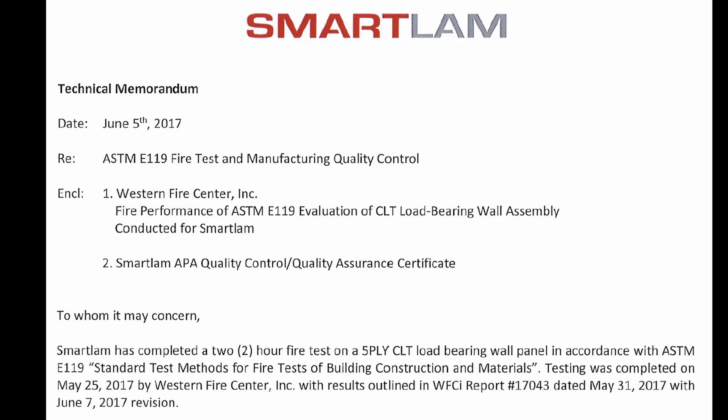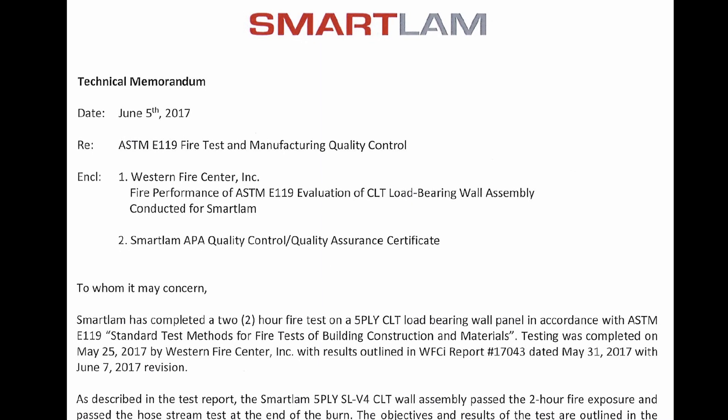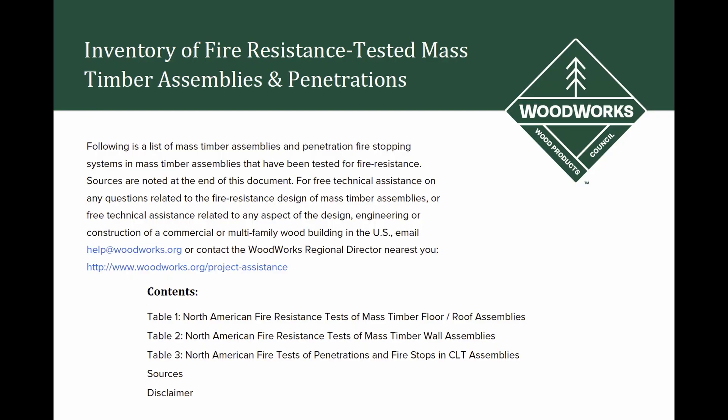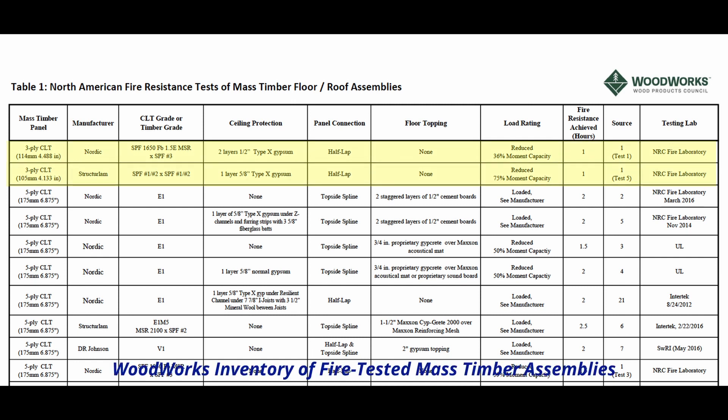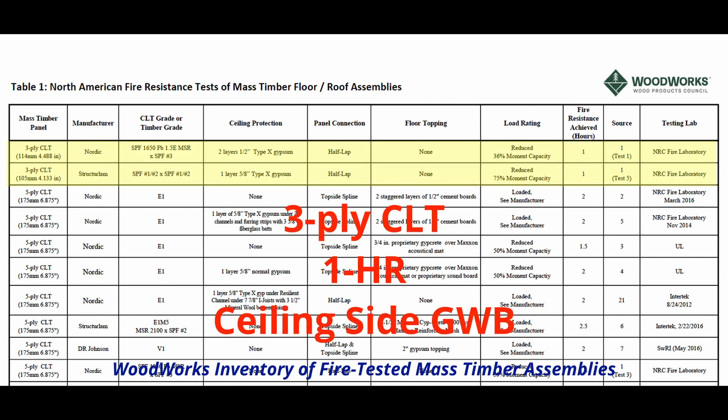One of the valid options for demonstrating the fire resistance rating of an assembly is through citing the test reports from an E119 fire test. Woodworks has compiled over 50 mass timber E119 fire-tested assemblies for floor, roof, and wall applications. So if we're looking at that first example of a three-ply CLT floor panel with direct applied gypsum wallboard to the ceiling, we could turn to this inventory of fire-tested assemblies and find that there is an option within this inventory for such a condition. That could be the basis for demonstrating on this project how it meets the code requirements for a fire resistance rating of a mass timber panel with direct applied gypsum wallboard.